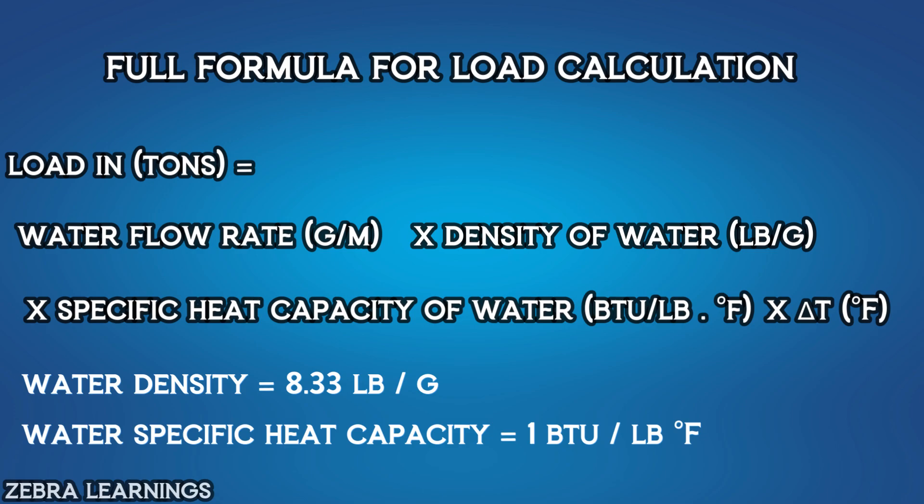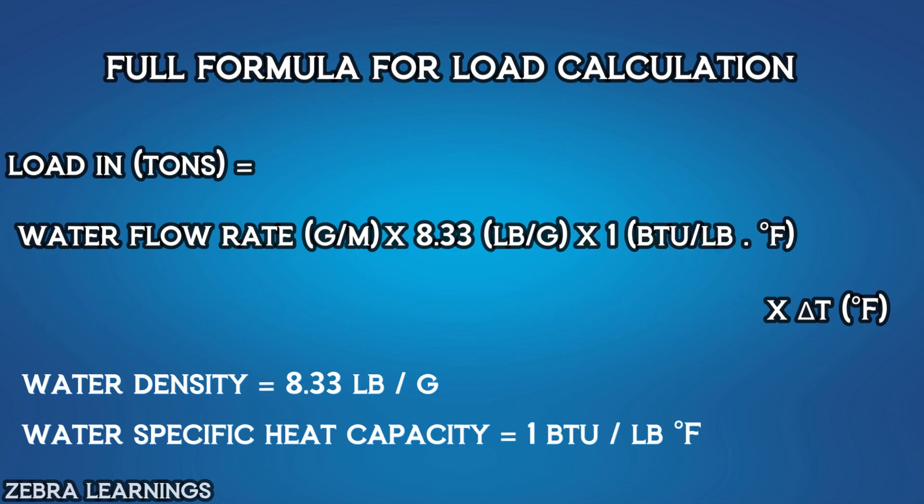Now let's use water flow rate in gallon per minute, multiply 8.33 pounds per gallon, multiply 1 BTU per pound degree Fahrenheit, multiply delta T in degree Fahrenheit.